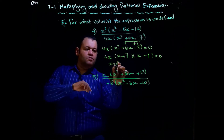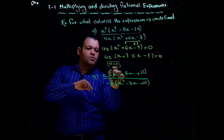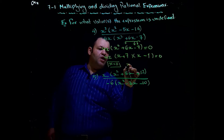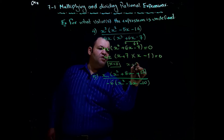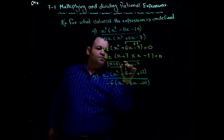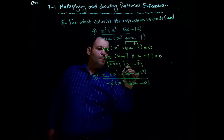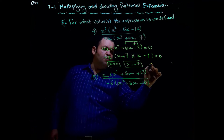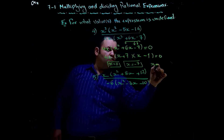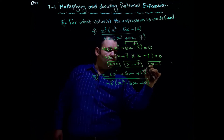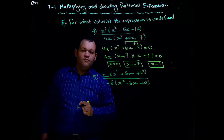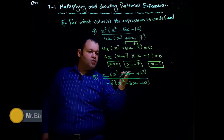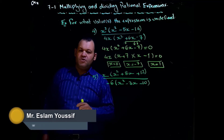From the factored expression, x equals zero. From (x + 7) = 0, x equals negative seven. From (x − 1) = 0, x equals positive one.